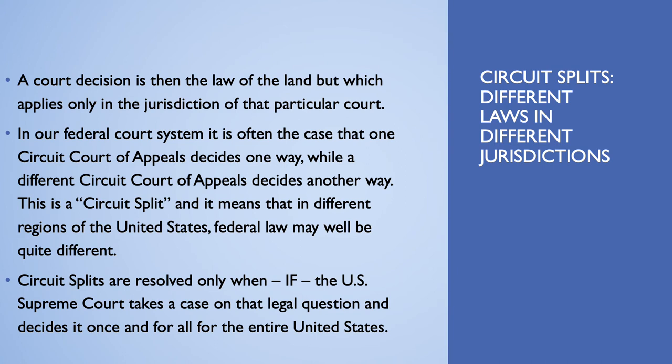Circuit splits. Because of the rule of precedent, when you have appeals courts with different jurisdictions, you can have different law in different jurisdictions. A court decision is the law of the land that only applies in the jurisdiction of that particular court. In our federal court system, it is quite often the case that one circuit court of appeals decides one way, while a different circuit court of appeals decides another way. This is called a circuit split, and it means that in different parts of the United States, federal law may well be quite different.